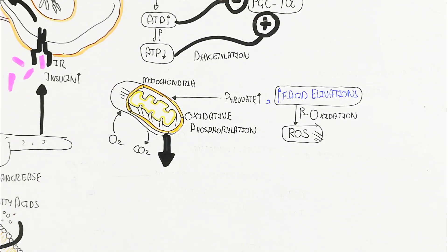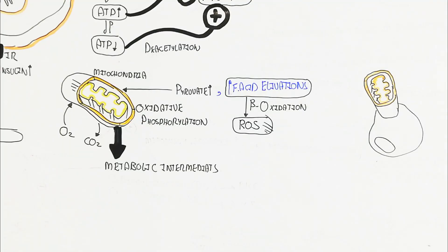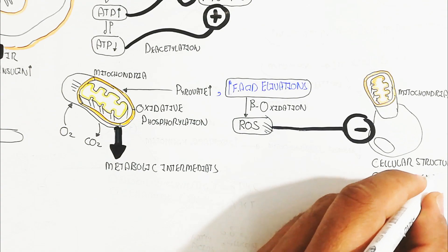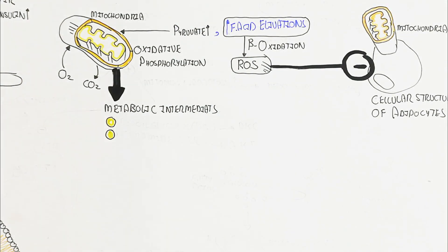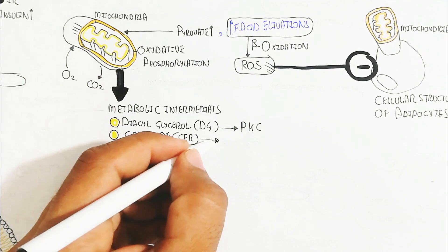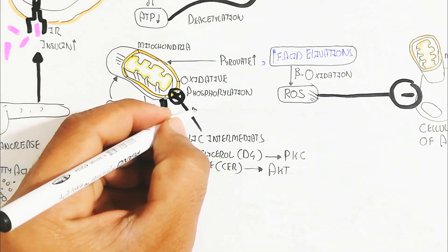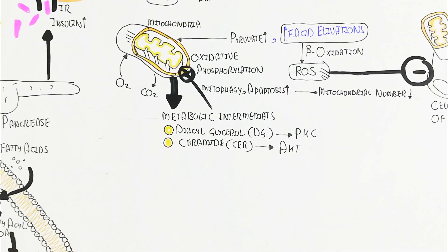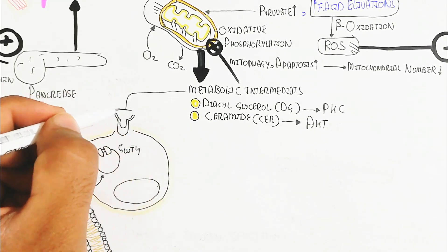Metabolic intermediates — diacylglycerol (DG) and ceramide — are two key examples. DG triggers the protein kinase C (PKC) pathway, and ceramide inhibits AKT signaling. Reactive oxygen species inhibit and damage the cellular structure of adipocytes, decreasing mitochondrial number. Mitophagy and apoptosis increase, further reducing the number of mitochondria. This decrease in mitochondrial number leads to decreased energy production while fat reserves increase.